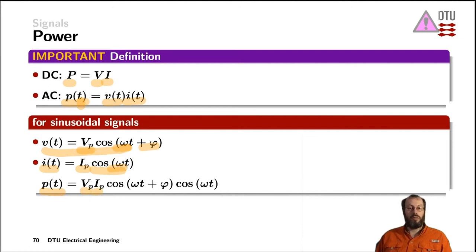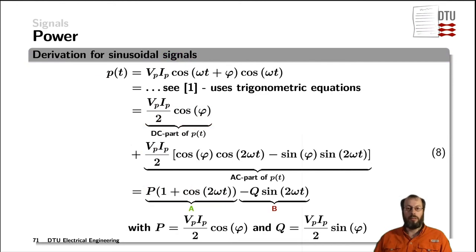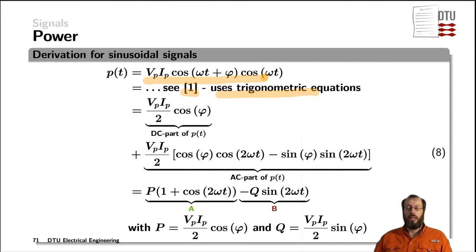Vp and Ip are constructing the amplitude of the resulting signal, and the cosine waves from the voltage and the cosine wave of the current show up here. Now the last equation from the previous slide is repeated as the first equation on this slide. Using trigonometric identities from the textbook, we can rewrite this equation. Jumping over the details, first of all we can see a DC part of the instantaneous power P(t), which is no longer dependent on time. We have the peak of the voltage and the peak of the current divided by a factor of two.